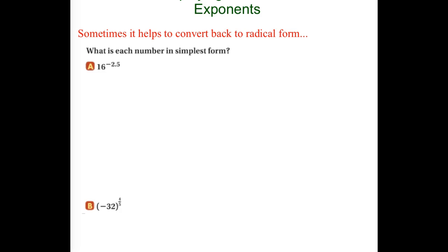Right now we have 16 to a negative 2.5. I want you to be able to do this without a calculator. So step one: what is 2.5 as a fraction instead of a decimal? So 2.5 would be 2 and a half — as an improper fraction, that would be 5 halves. So I'm going to rewrite this as 16 to the negative 5 halves.